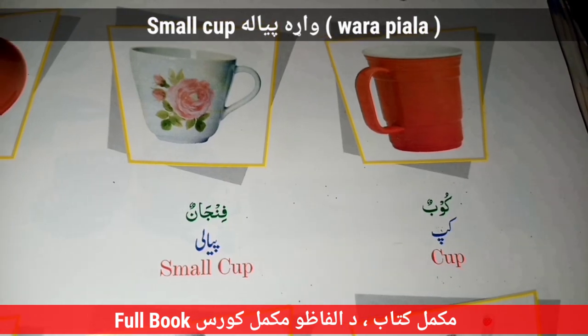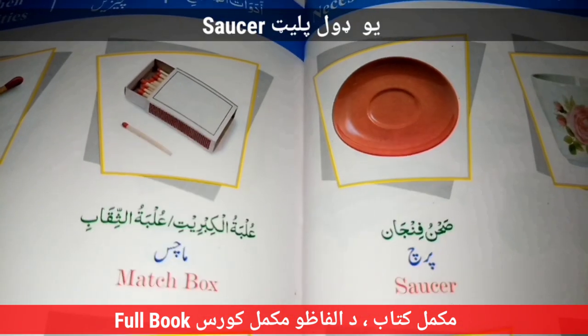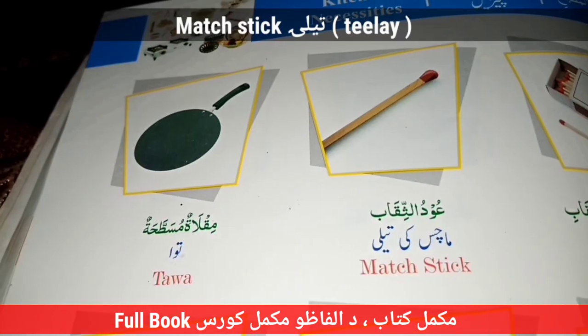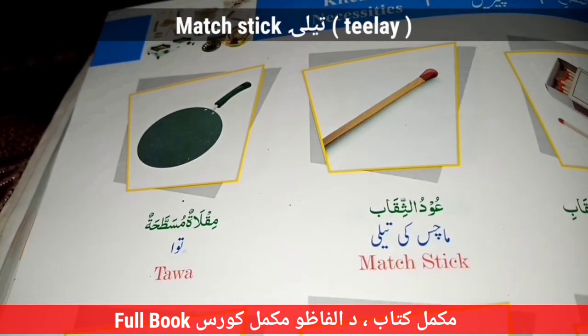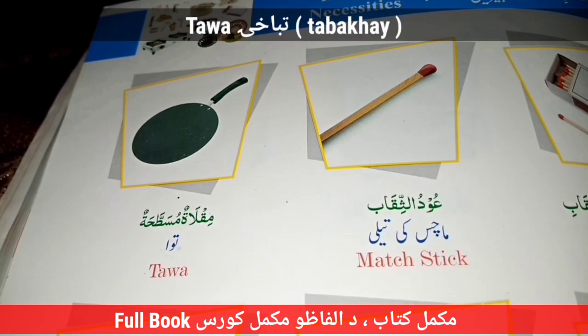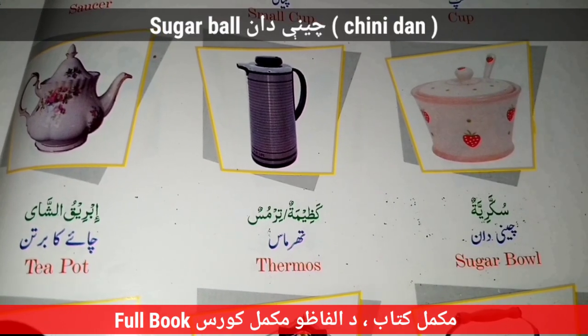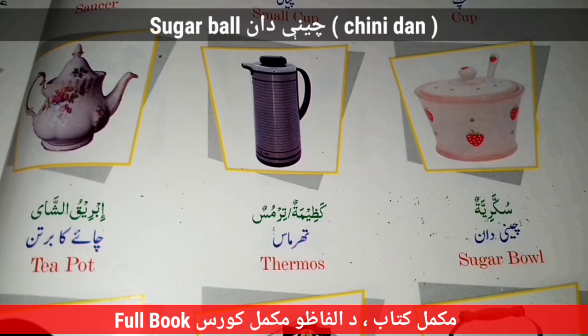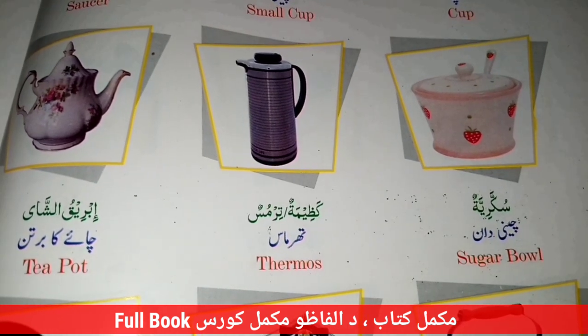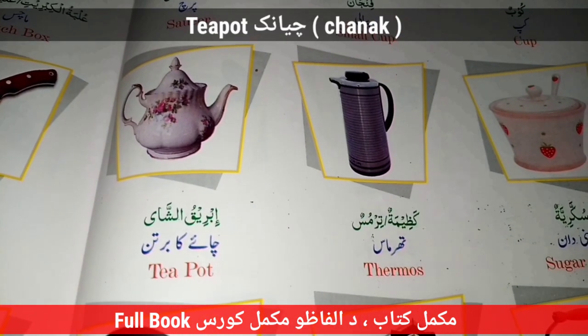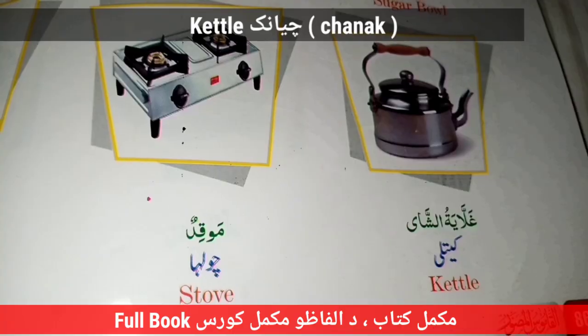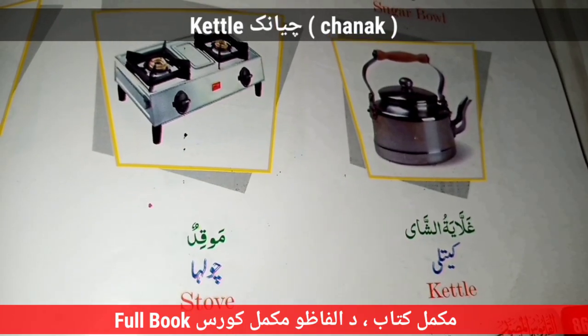Cup — Piala. Small Cup — Vada Piala. Saucer — Pritch. Match Box. Matches — Match Stick. Tile — Tawa. Tabakhe. Sugar Bowl — Chini Daan. Thermos. Teapot — Chyanak. Kettle — Chyanak. Stove — Chula.